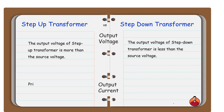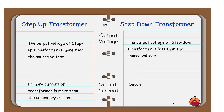The primary current of step up transformer is more than the secondary current. In step down transformer, secondary winding current is more than the primary winding current.